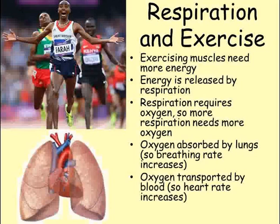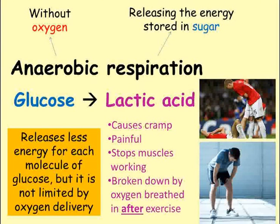If the cell requires so much energy so quickly that oxygen cannot be supplied to the cell fast enough to meet the demand, it's able to respire in a different way which does not use oxygen. This is called anaerobic respiration, meaning without oxygen. In this process, glucose is converted to lactic acid. It's still exothermic but releases less energy for each molecule of glucose than aerobic respiration does. However, as it's not relying on the delivery of oxygen to the cell, a larger amount of glucose can be broken down at once so that overall it releases more energy. The problem is that the lactic acid being produced is poisonous to cells and causes muscles to be painful, cramp, and stop working. So anaerobic respiration is only effective for short periods of time, such as when sprinting.